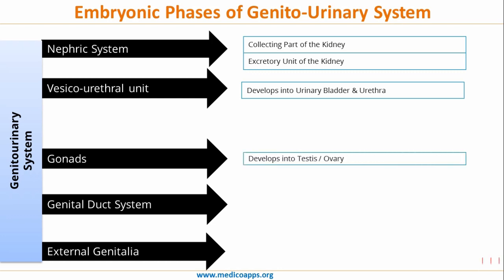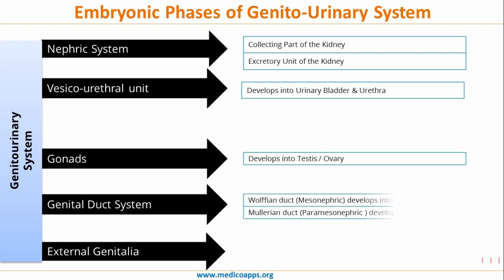The gonads are the ovary or the testis, while the genital-ductal system consists of the Wolffian duct, also called the mesonephric duct, which develops into the male genital system, and the Mullerian duct, also known as the paramesonephric duct, which develops into the female genital system.